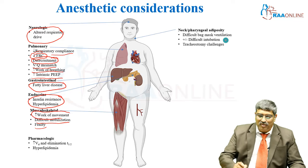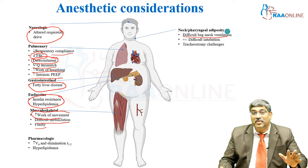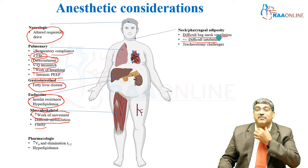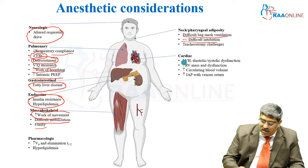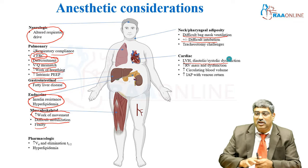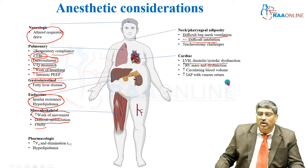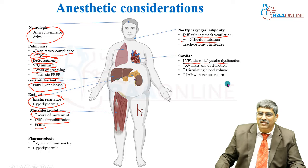Coming to the neck, there is difficult bag-mask ventilation, intubation can be more difficult, and tracheostomy is very difficult if there is a lot of neck fat. Regarding the cardiovascular system, there is left ventricular hypertrophy, both diastolic and systolic dysfunction, increased right ventricular mass and dysfunction, increasing circulatory blood volume, and high blood pressure with increased venous return.